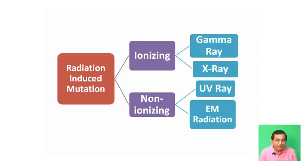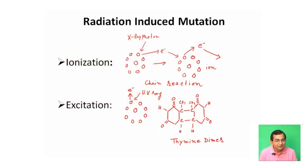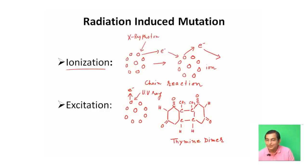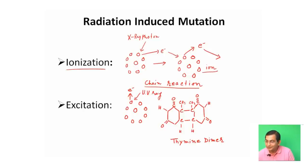In radiation-induced mutations, mutation is produced by ionization — the formation of ions. When an X-ray photon strikes an atom, electrons come out and subsequently strike another atom, forming a chain reaction. Multiple ions develop, triggering chemical reactions that produce mutations.